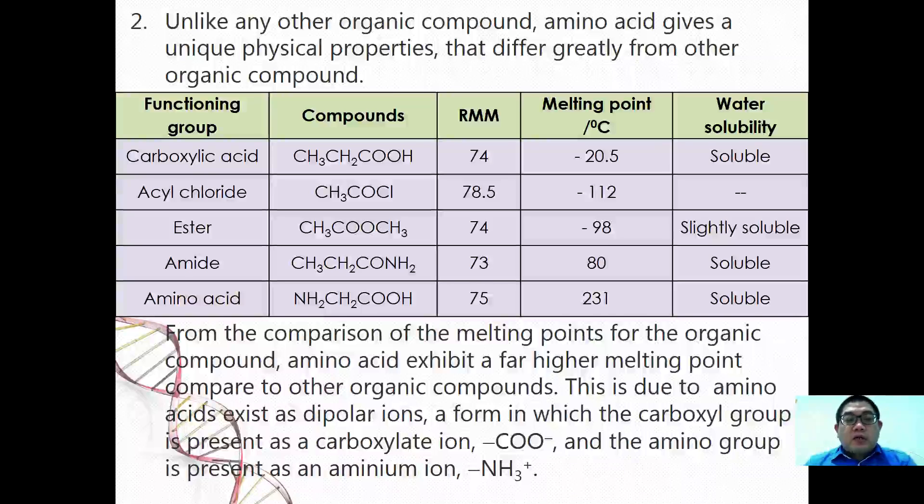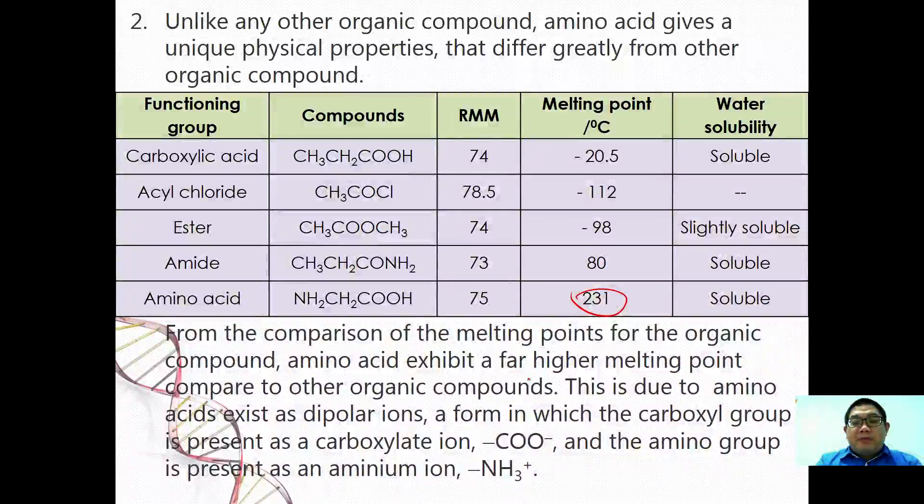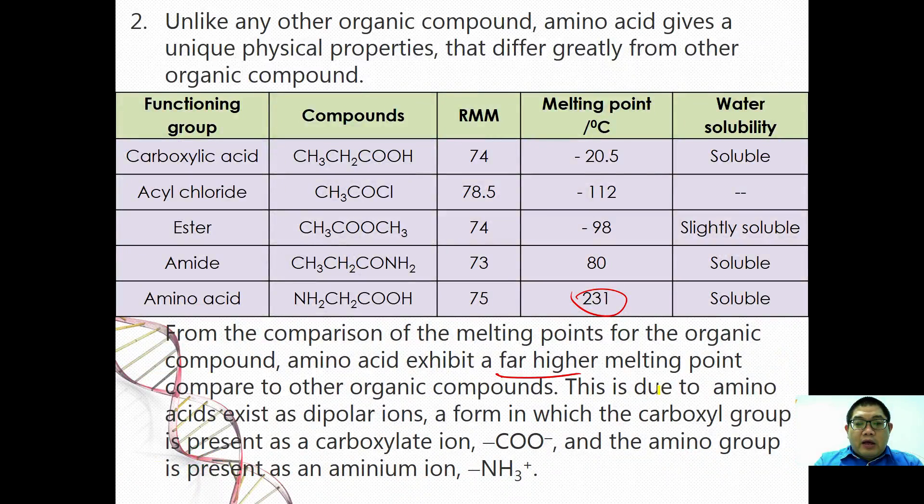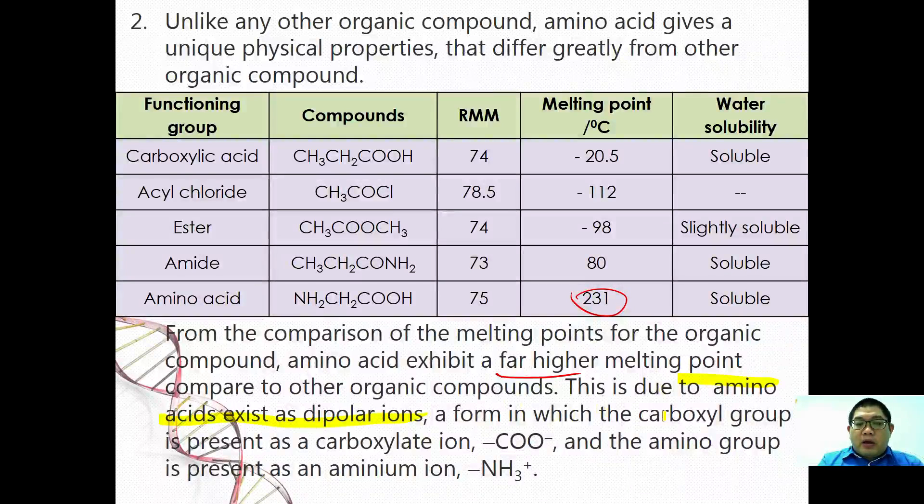These are the physical properties of a few functioning groups. As you can see that amino acid has the highest melting point of all of them. Why is it that amino acid exhibit a far higher melting point compared to others? This is due to amino acid exists as a dipolar ion where the proton from the carboxyl group is donated to the amino group.